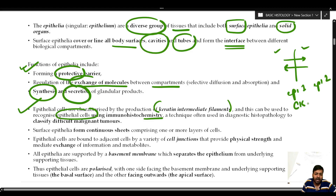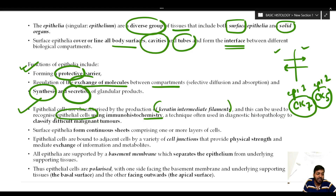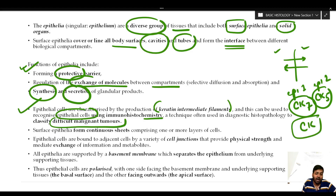For example, some epithelial cells produce cytokeratin CK7 whereas others produce cytokeratin CK5. Different kinds of cytokeratins are produced by different epithelial cells, and this knowledge is utilized in diagnostic histopathology to classify difficult malignant tumors. Because epithelial cells produce keratin intermediate filaments, these are used as markers for classifying difficult epithelial malignancies.